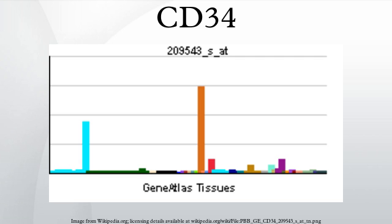Conversely, under other circumstances CD34 has been shown to act as molecular Teflon, and block mast cell, eosinophil, and dendritic cell precursor adhesion, and to facilitate opening of vascular lumens.